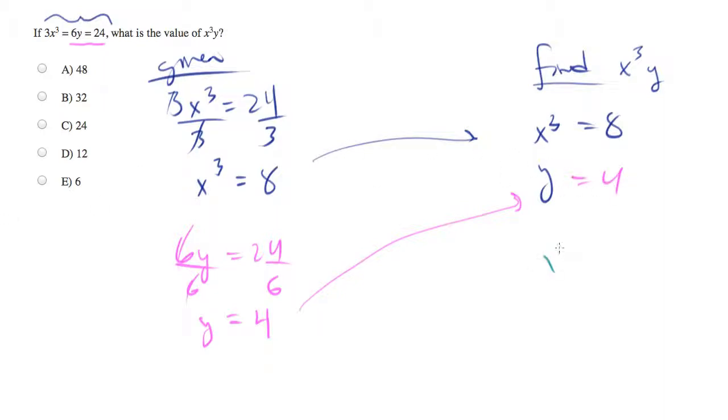Finally, what we can do is we can generate x³y as simply the plug-in, 8 and 4. 8 times 4 is 32, and that will be your answer, which is b.